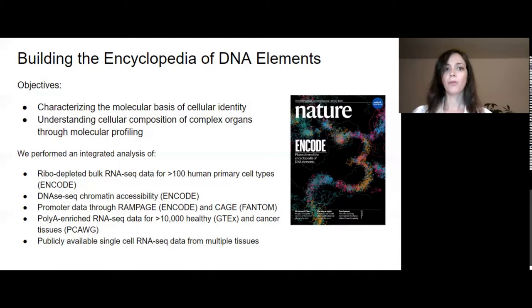In particular, we analyzed data from over a hundred human primary cells, meaning extracted directly from tissues with very low passage number. We looked at gene expression with RNA-seq, chromatin accessibility with DNase-seq, and promoter data with RAMPAGE and CAGE. Then we wanted to relate this analysis with gene expression data from complex organs, both healthy from the GTEx project or cancer tissues from the TCGA project. In our analysis, we also used thousands of single-cell data, which has higher resolution than bulk RNA sequencing in terms of cellular specificity. Unfortunately, I won't have time to talk about the single-cell analysis here, but I invite you to read our paper if you are interested.